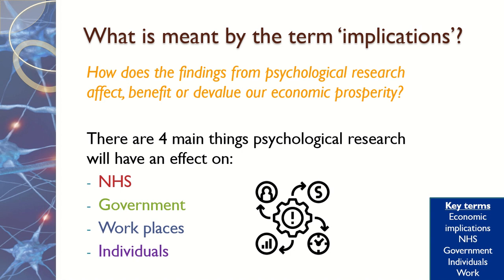The NHS is costly, so if we can make it more cost-efficient by creating effective treatments or diagnosing people effectively, we can have a positive economic impact because the NHS is spending less money. The government spends lots of money on the NHS, on supporting people who are out of work, and on schools. If people are in work and not receiving benefits, that has a positive impact on the economy because the government can spend more money on other things such as the NHS.